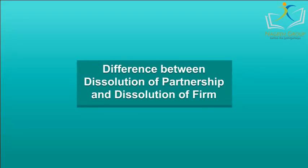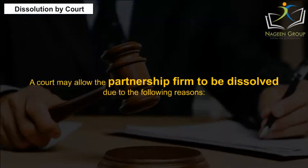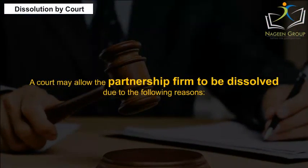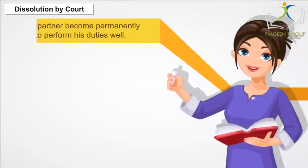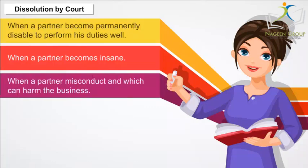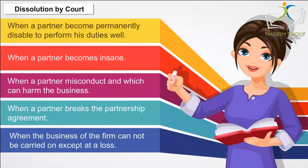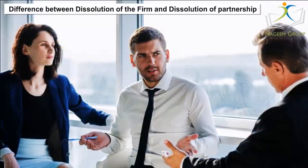Dissolution by Court: A court may allow the partnership firm to be dissolved due to the following reasons: when a partner becomes permanently disabled to perform his duties well; when a partner becomes insane; when a partner misconducts in a way that can harm the business; when a partner breaks the partnership agreement; or when the business of the firm cannot be carried on except at a loss.